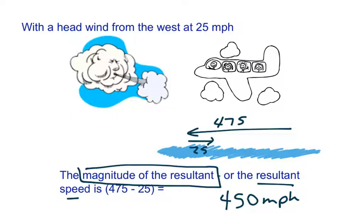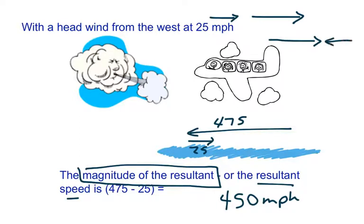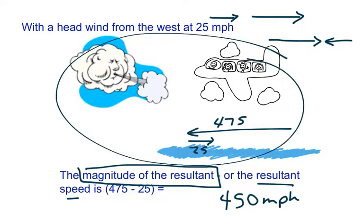When you have a situation like that: if you have a plane going in one direction and a tailwind, that means it's pushing the plane, so the resultant velocity will be faster. If you have a plane going in one direction and a headwind, that means it's pushing against it — that's what we just saw. If you have a plane going in one direction and a crosswind, it means the wind is pushing in a contrary direction.